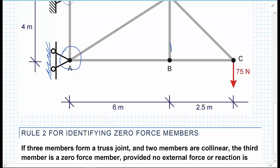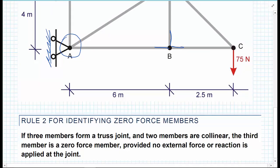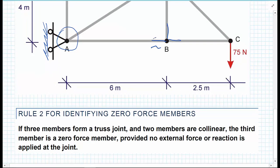But we move on to B, we have one, two, three members. And the forces in AB and BC are collinear. They're acting along the same axis.